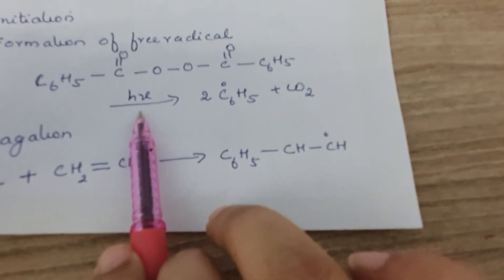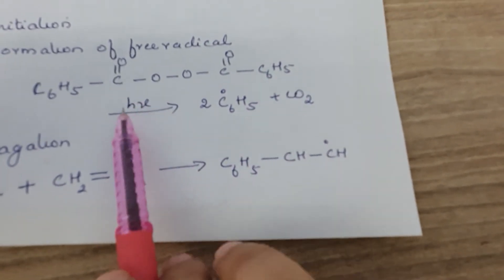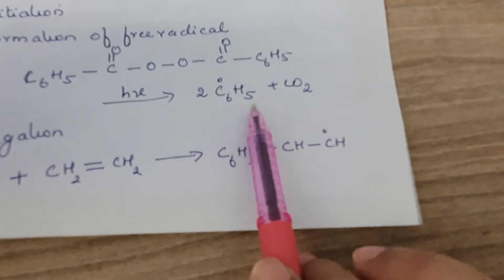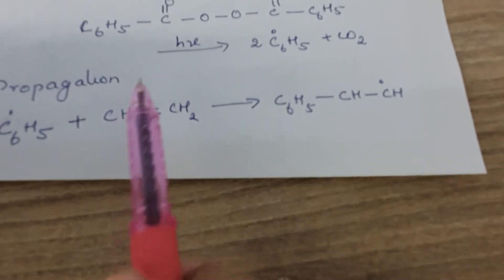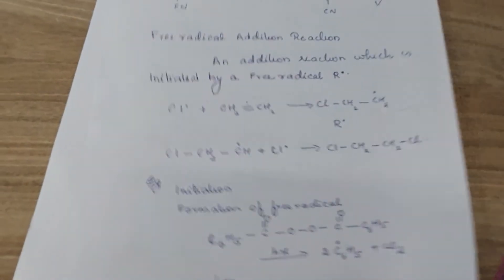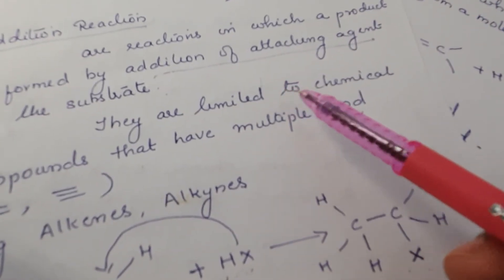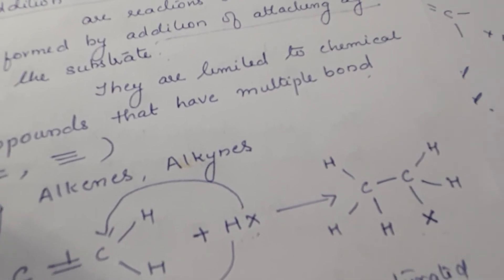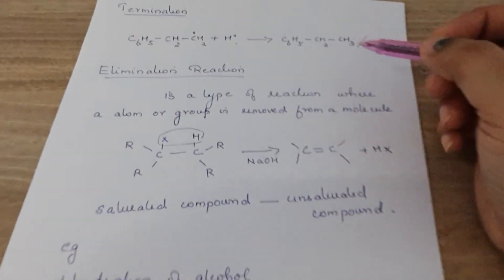In initiation, free radicals are generated either by photolysis or pyrolysis. For example, benzoyl peroxide (C6H5COO−OOCC6H5) upon heating generates C6H5 free radicals. These free radicals propagate the chain reaction. In termination, the chain ends when radicals combine — for example forming C6H5CH2CH3. So addition reaction is the addition of an attacking reagent on a substrate, and can be electrophilic, nucleophilic, or free radical addition.